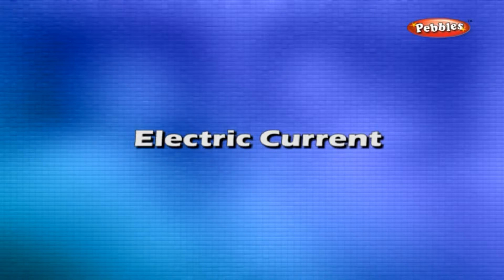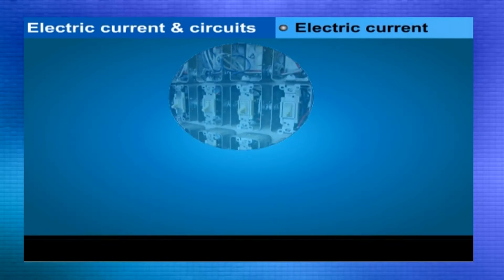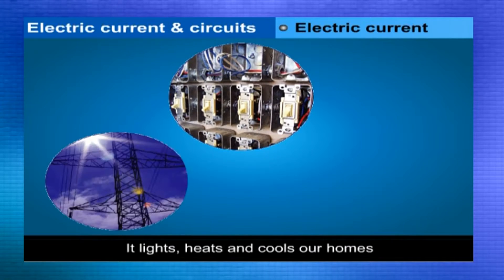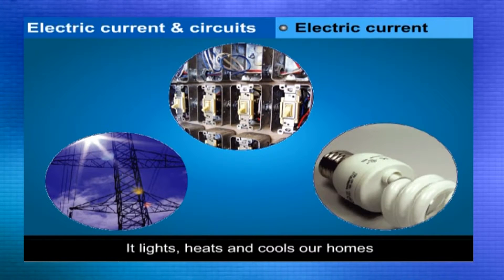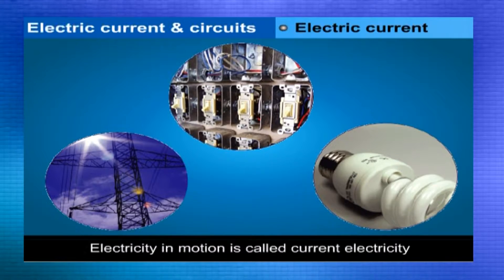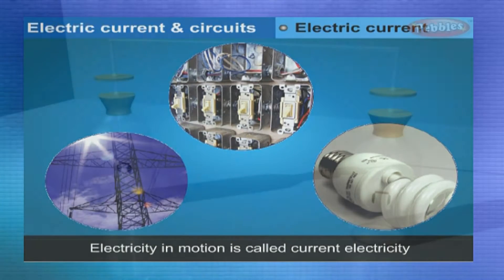Electric current. Electricity plays a very important role in our daily life. It lights, heats, and cools our homes and also performs a number of routine jobs for us. Electricity flows through electric wires. Electricity in motion is called current electricity.